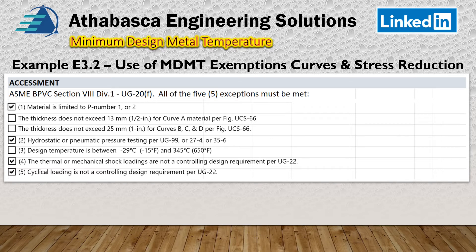Just like the previous example, we go through all five exceptions to make sure they're met. The material is a P1 or P2 material — if it's non-ferrous or high alloy, these curves don't apply. Because we're thicker than a thin sheet, we don't pass UG-20F. But we do meet the hydro test criterion, and we're not looking at thermal shock loading or cyclic loading.